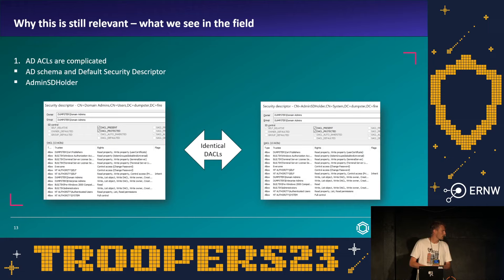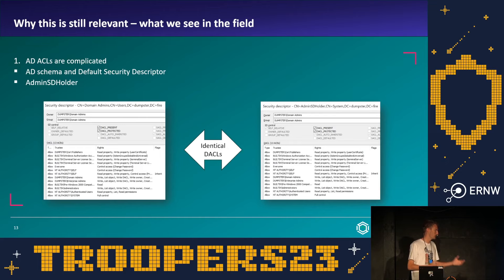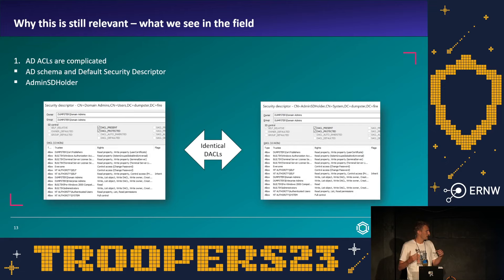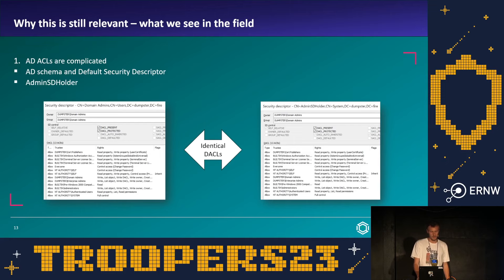Another example of why ACLs are complicated is the AdminSDHolder object. It is a special object located within Active Directory whose security descriptor is replicated to privileged objects like Domain Admins and their members every hour on a scheduled basis. So if a penetration test reports compromising a domain admin via an ACL permission, administrators might delete those ACEs from Domain Admins — thinking they've solved the problem — but within less than an hour, Active Directory will restore those permissions automatically. They will still be vulnerable.